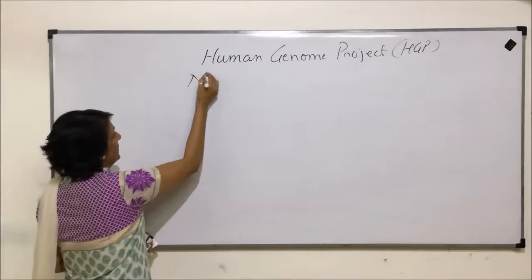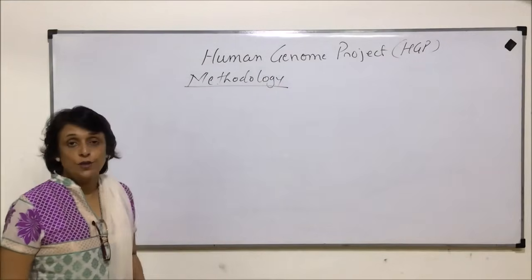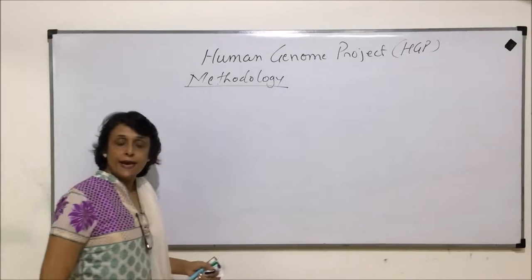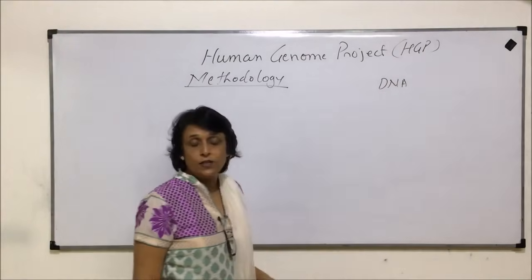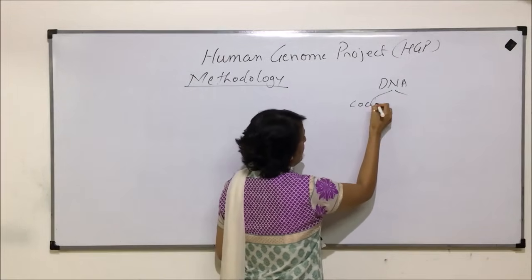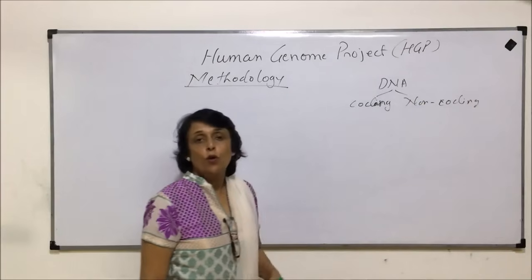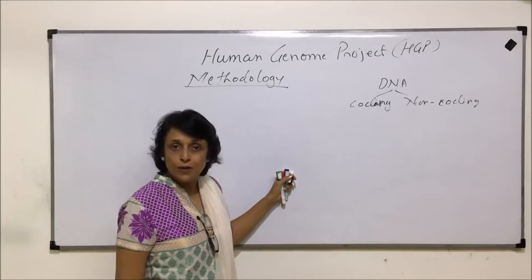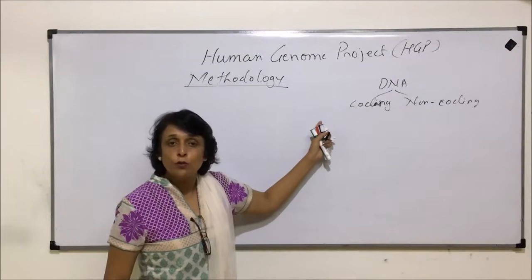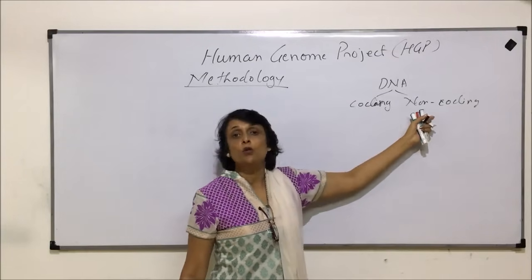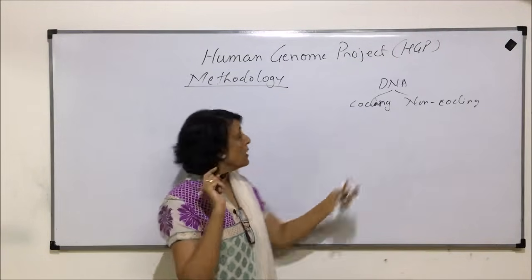Let us talk about the methodology. They started with two distinct approaches. In our DNA there are two parts: a coding part and a non-coding part. The coding part codes for proteins after transcription and translation, while the non-coding part, which is the heterochromatin, normally does not give us anything. So one approach was: why sequence this non-coding part when it is not coding for anything?